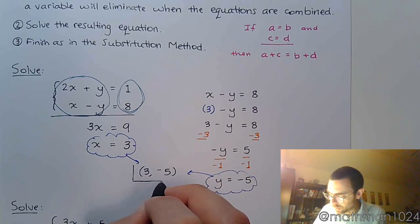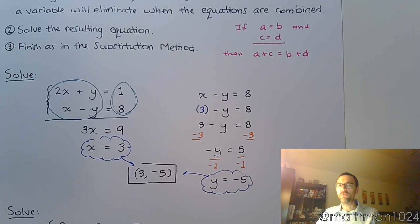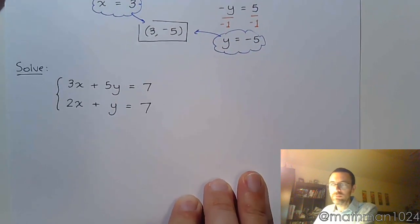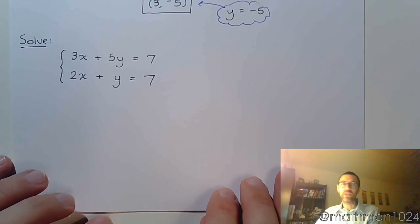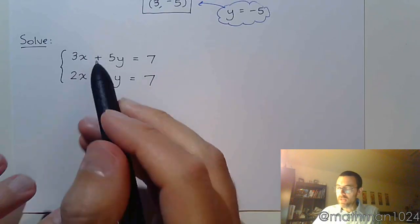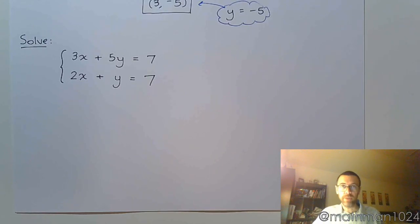Not all of these systems are going to be set up so it's just that easy. For example, look at the next one. In this next one, we have 3x plus 5y equals 7 and 2x plus y equals 7. If I try to combine everything on the left side, nothing goes away. If I combine all of this, I get 5x and I get 6y. That doesn't help me. But what I can do is I can multiply one or maybe both of these equations so that something can eliminate.